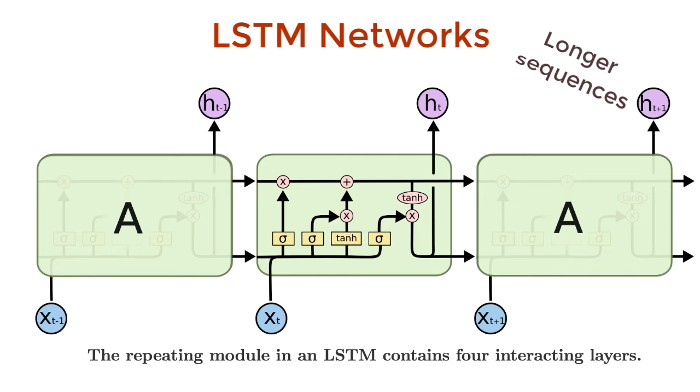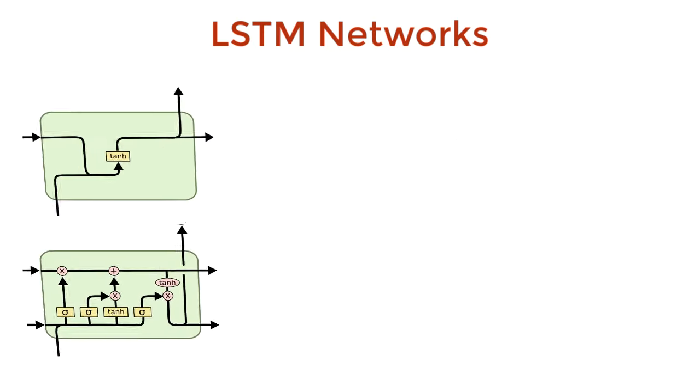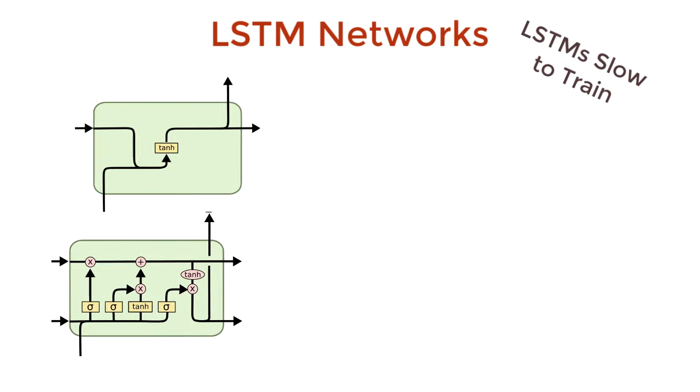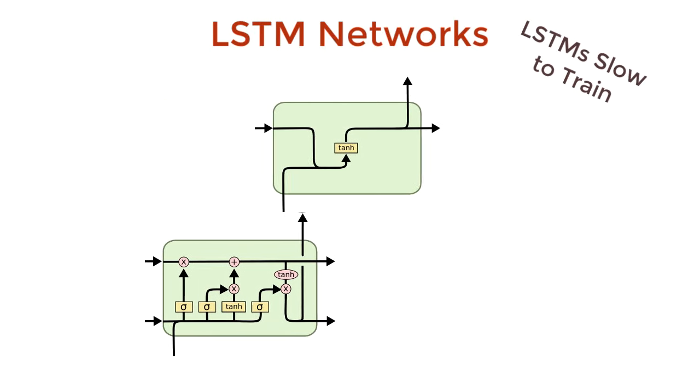Now, to that second point, we seem to be able to deal with longer sequences well. Or, are we? Well, kind of. Probably on the order of hundreds of words instead of a thousand words. However, to the first point, normal RNNs are slow, but LSTMs are even slower. They're more complex.